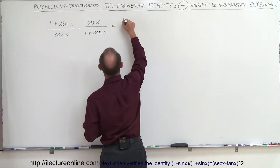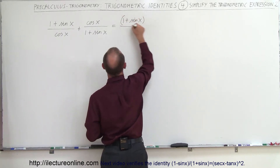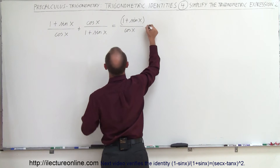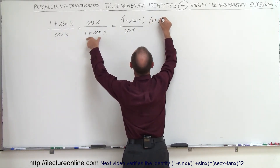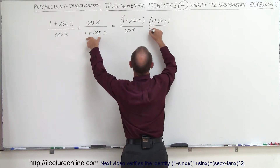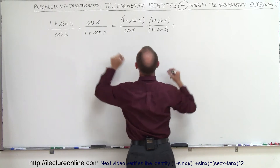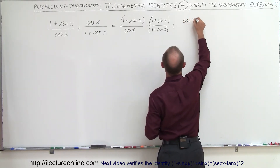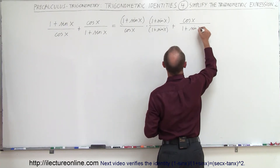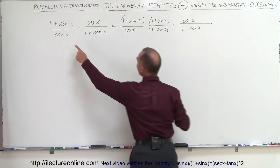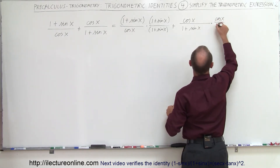So this is equal to (1 + sin x) / cos x, multiplied by (1 + sin x) / (1 + sin x), plus cos x / (1 + sin x), multiplied by cos x / cos x.